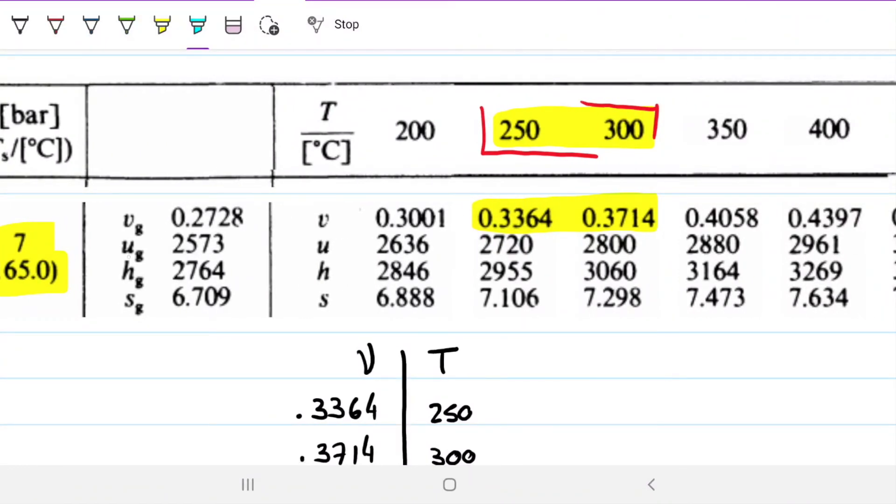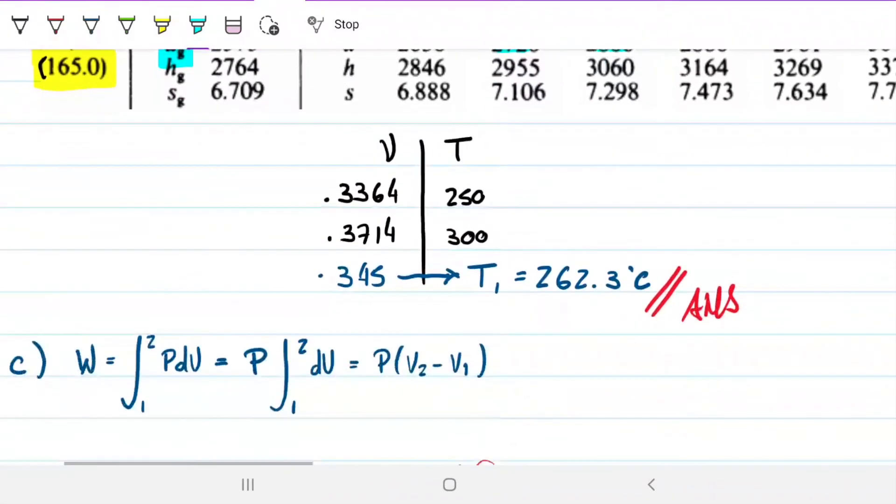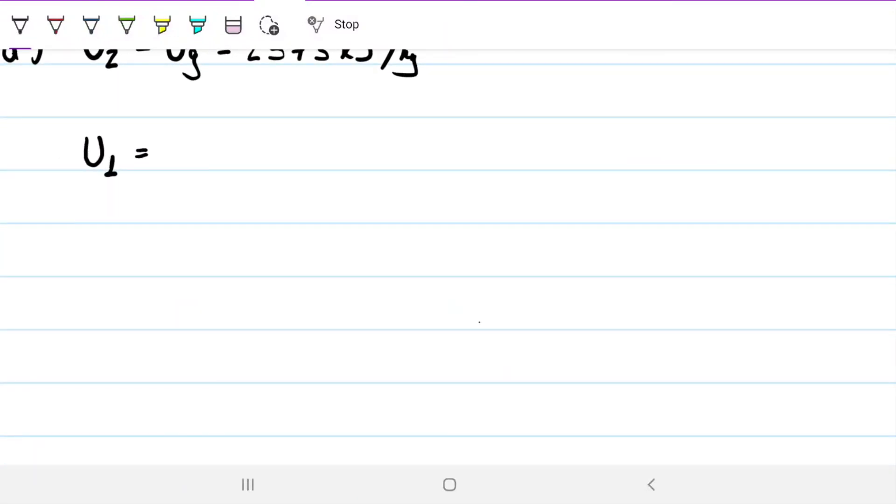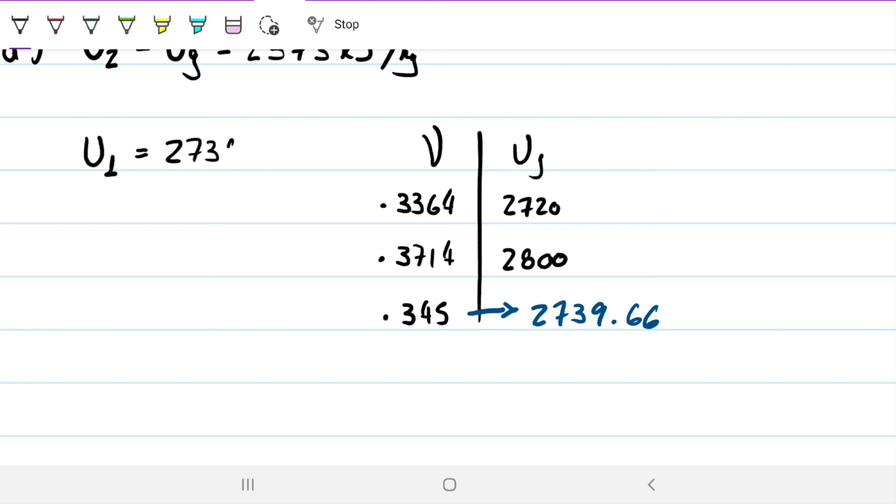What about U1? Well, U1 is a superheated fluid. So again, we can go back to the table of the superheated fluid, the second table we looked at. We know that my U will fall between these two values here. We're going to have to interpolate to find the value for U1 for state 1. Same idea, same interpolation. I'll put the values for U here and the specific volume. Same thing as before. And we get our U1 to be 2739.66 kilojoules per kilogram.